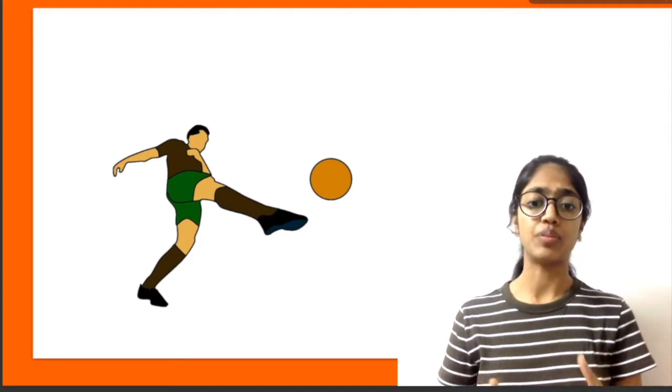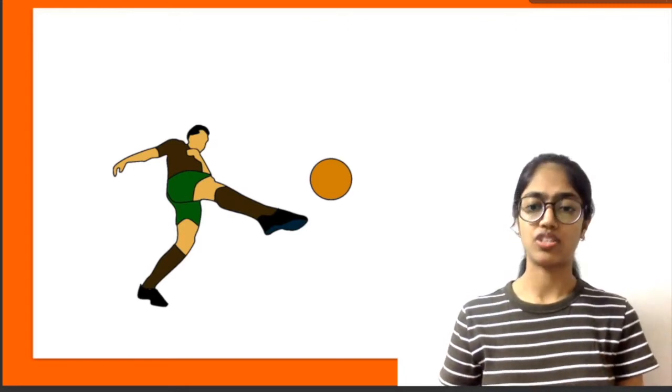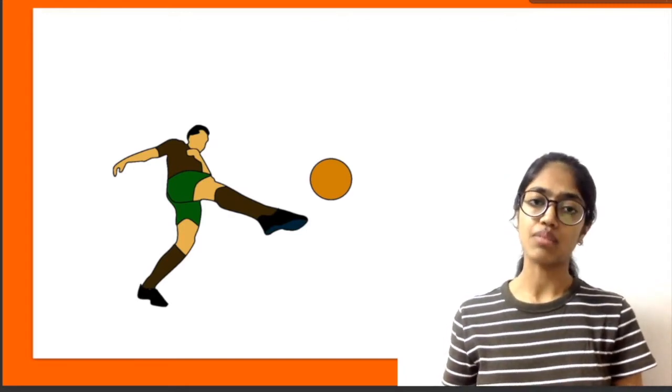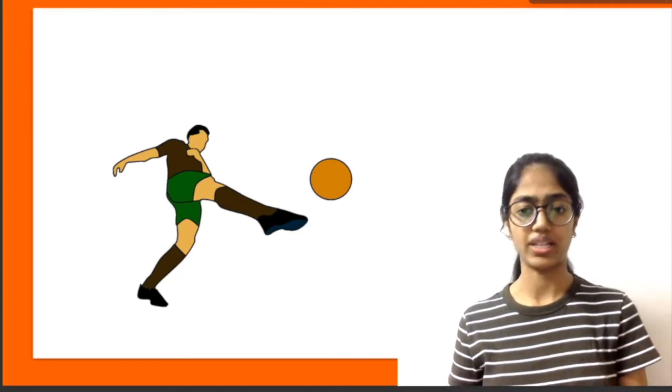Hence, to keep the goalkeeper guessing, he will randomize his strategy. That is, sometimes he will kick towards the left side and sometimes towards the right side.